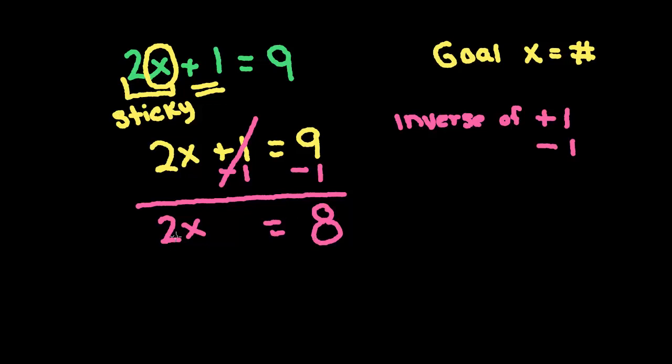Now we can deal with this final step here. And this is just a one-step equation like we did previously. So we look at what is the relationship between the x and the 2, because this is the 2 we want to make go away now. And the x is being multiplied by 2. So we want the inverse of times 2.